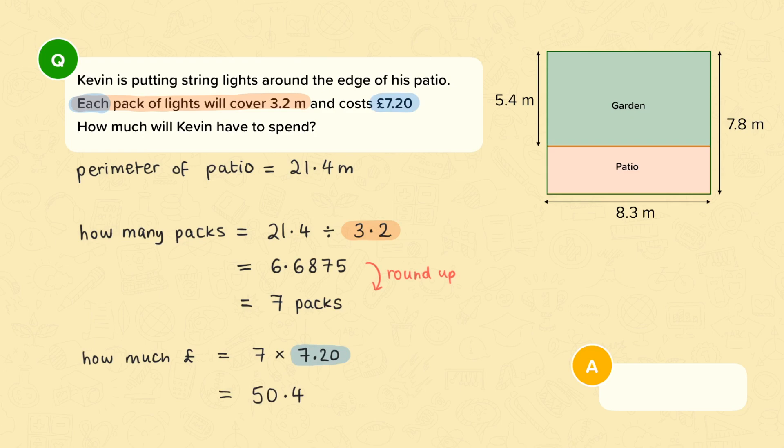Now this would normally be correct. But because we are asked how much he is spending, that means our answer needs to be a price. So you would need to write down £50.40.